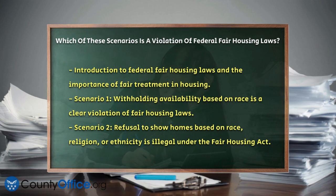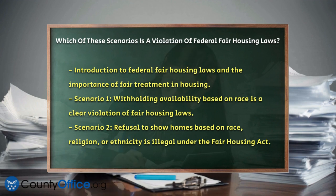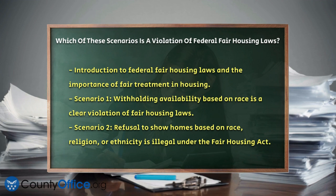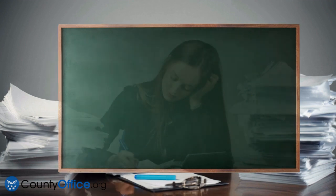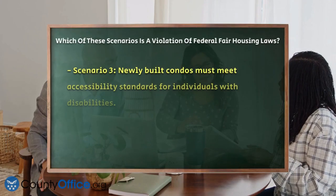Scenario 1: Withholding availability. If a landlord tells one prospective tenant that an apartment is available, but then tells another tenant of a different race that the apartment is not available — even though it ends up being leased after the initial inquiry — this is a clear violation. This behavior discriminates against protected classes such as race, color, or national origin.